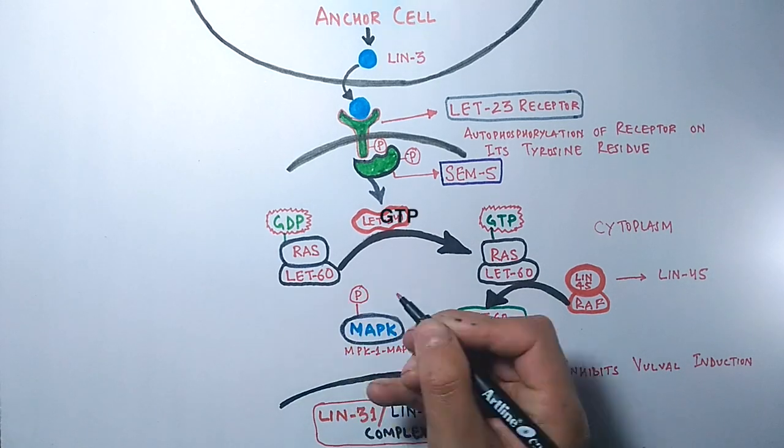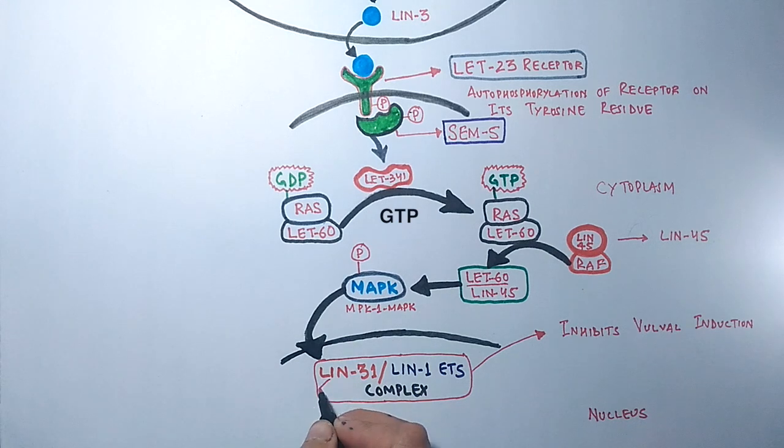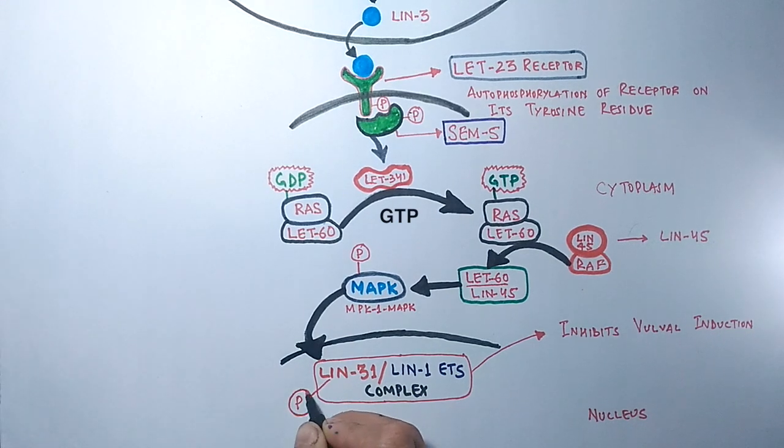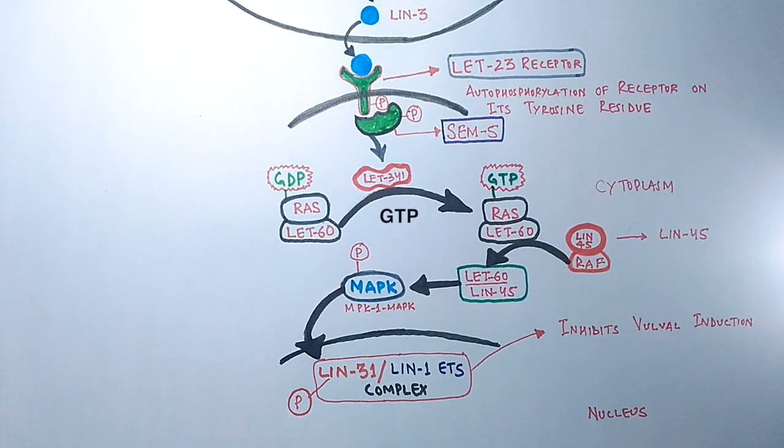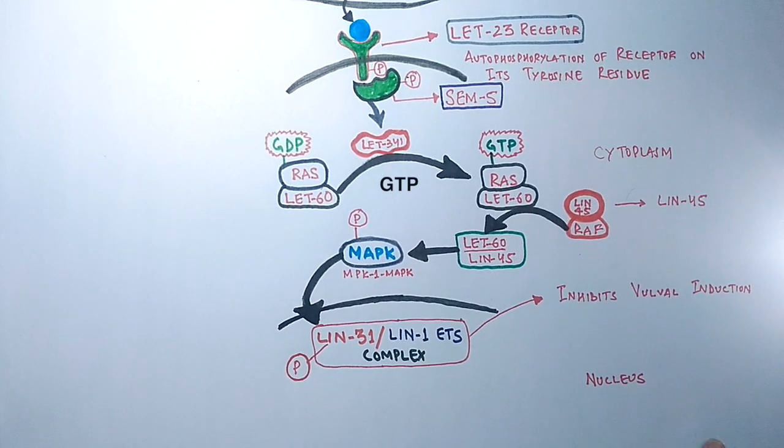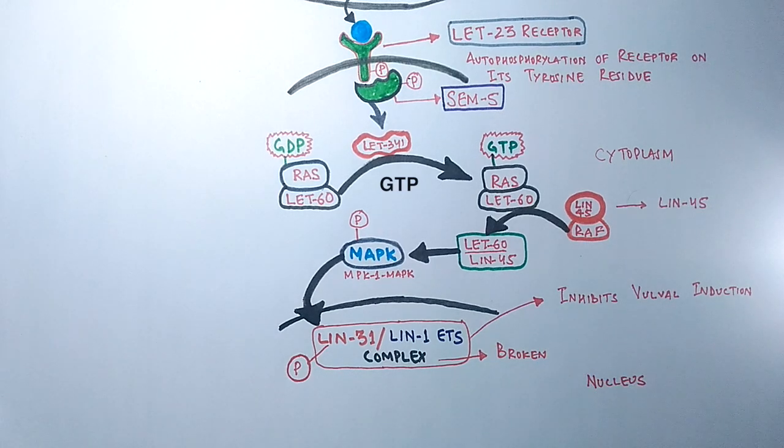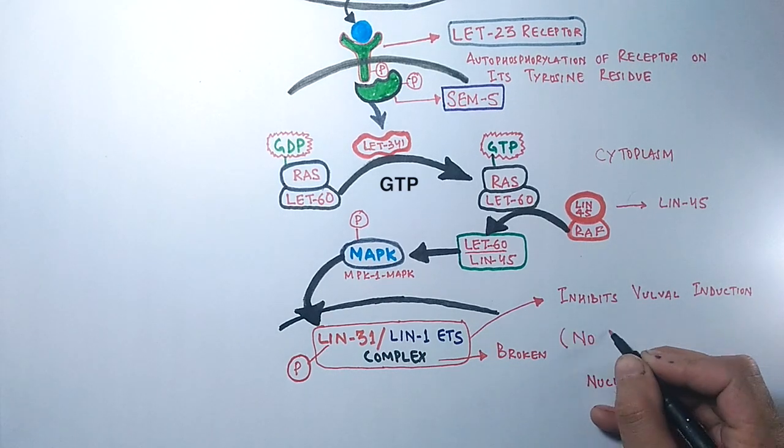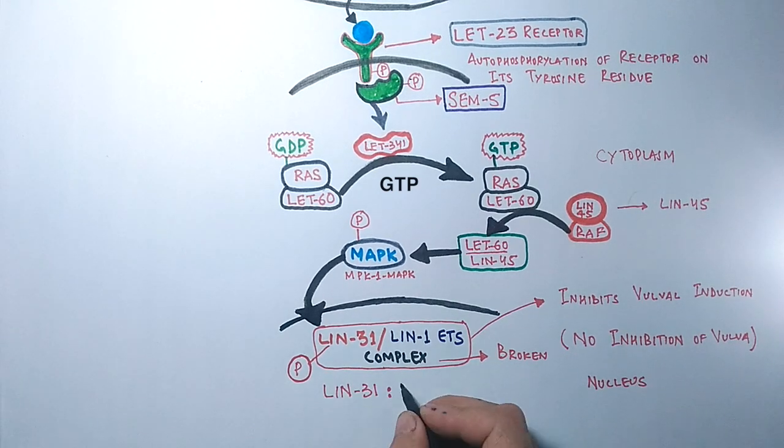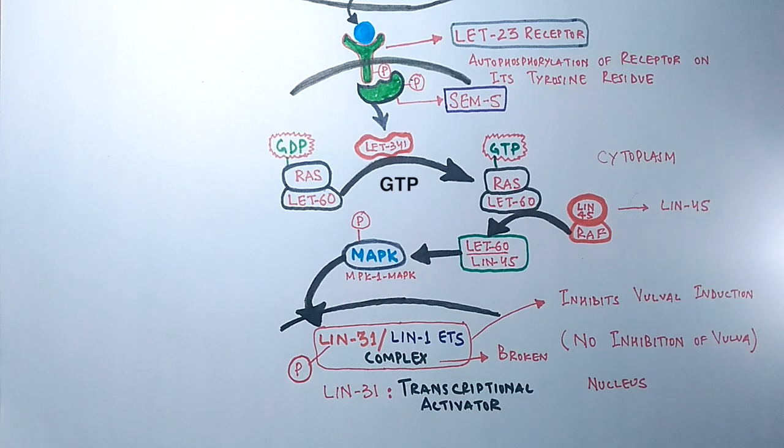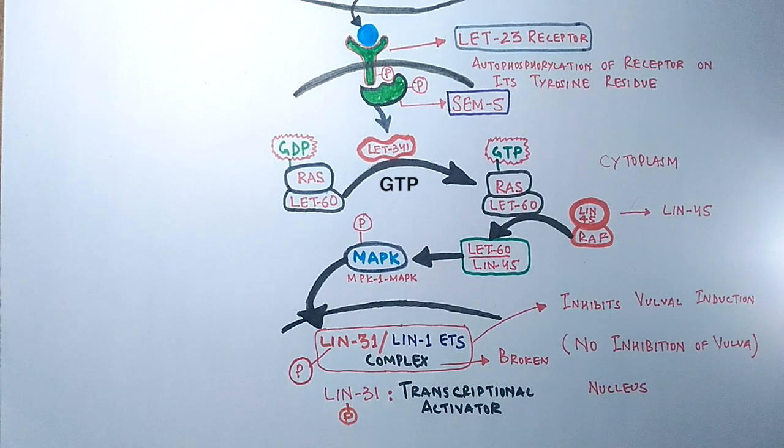From here it gets into the nucleus of VPC cell where it phosphorylates the lin-31 lin-1 ETS complex, the vulval inhibitory complex. It phosphorylates particularly the lin-31 molecule first. With this phosphorylation, the lin-31 lin-1 complex is disrupted and broken. With this, the vulval inhibition signal is stopped and there will be vulval induction. The phosphorylated lin-31 acts as a transcriptional activator in vulval developmental process. This signaling causes the vulval precursor cell to become a 1 degree vulval cell.